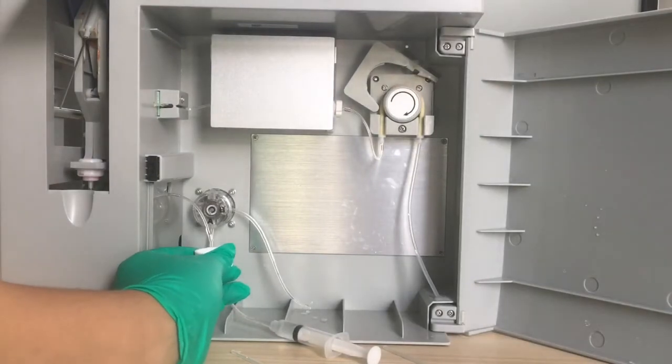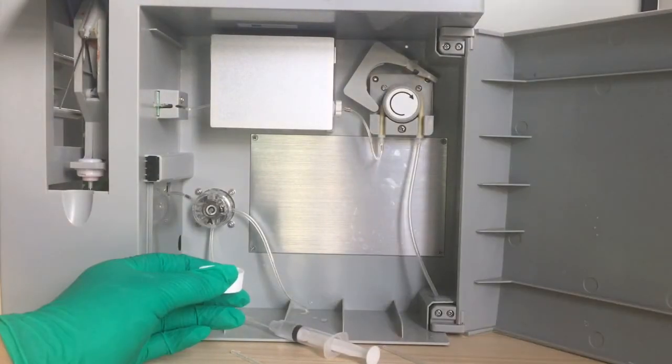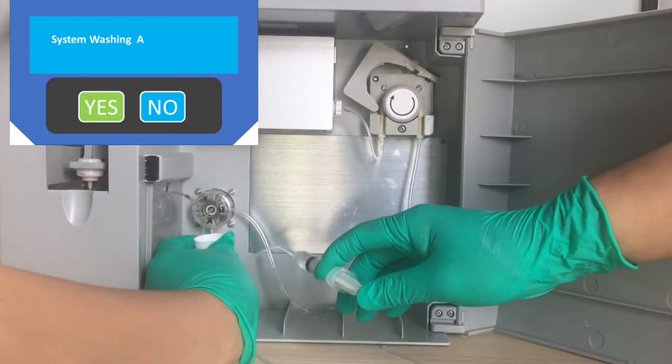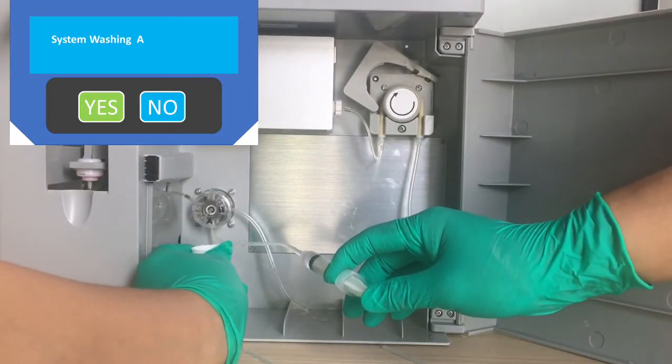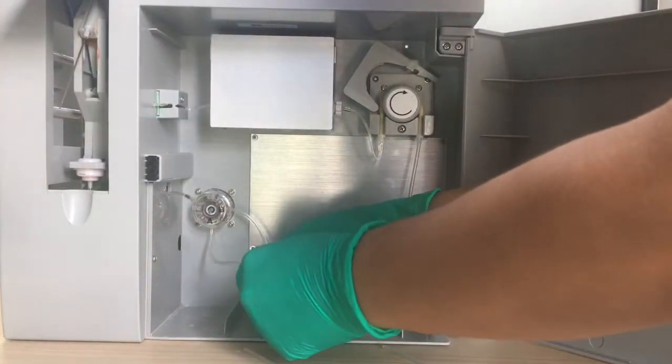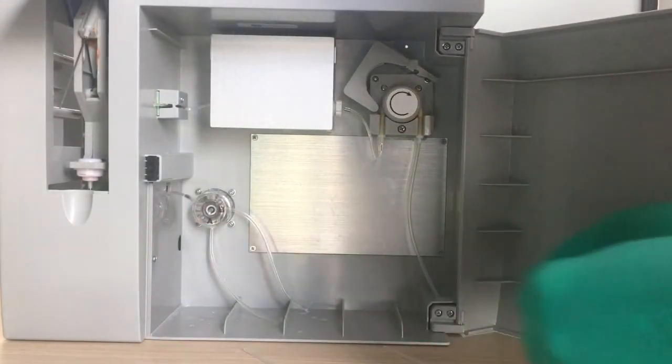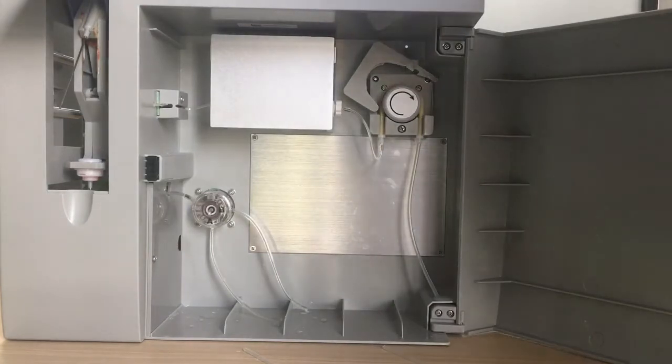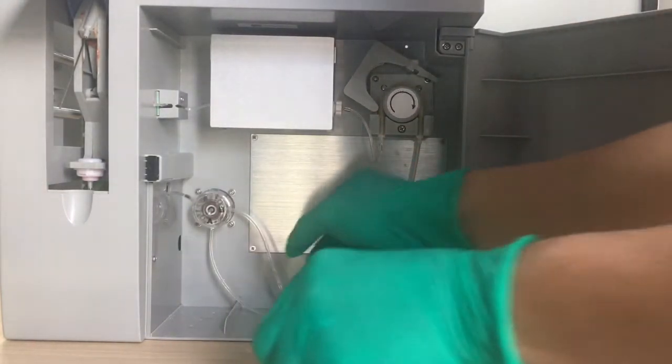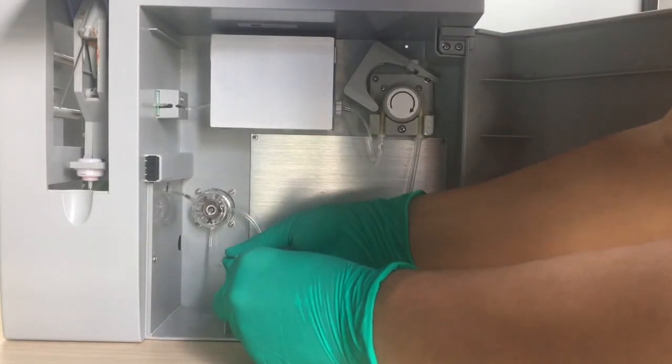Then we can wait for the system washing A. During system washing A, we can push inject water. By this way, we can make sure this part is smooth. Then we clean the water with tissue.